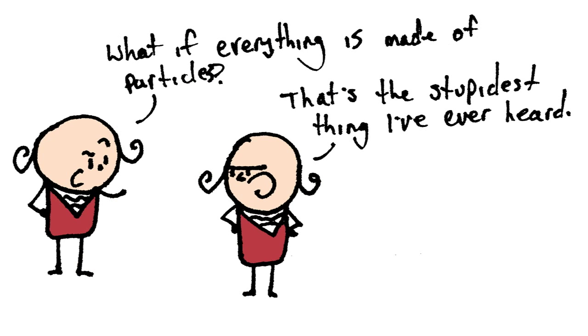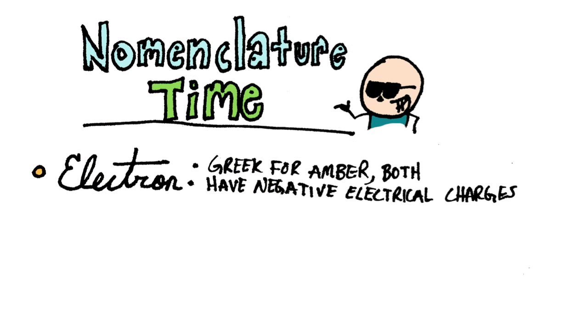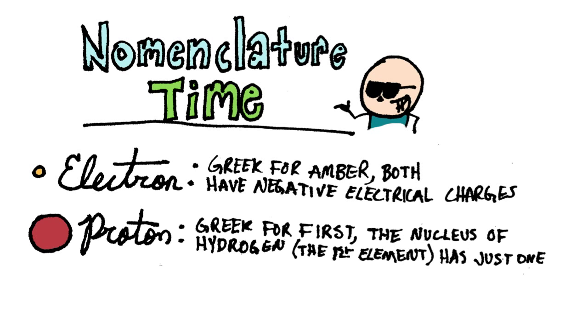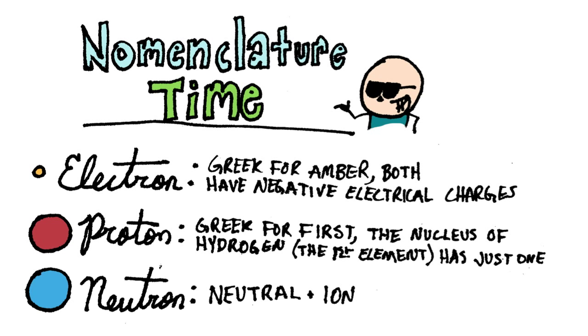History has a weird way of naming things, and particles are no exception. Electron is Greek for amber, a material known for becoming negative when charged. And electrons are negative too, so boom, there's a name. Proton is Greek for first, as in the nucleus of the first atom, hydrogen. And neutron, arguably the best named of the three, is just a Franken word combining the words neutral and ion.